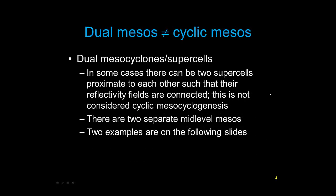Before I talk about cyclic mesos, I think it's important to note what is NOT cyclic mesocyclogenesis. Here we're talking about low-level mesocyclones. There are a lot of cases where you have dual supercells or mid-level mesocyclones where two supercells are fairly close to each other — the reflectivity may or may not be touching — but this is not considered cyclic mesocyclogenesis. I have two examples on the following slides.